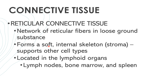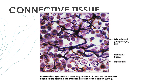Your reticular connective tissue is a network of reticular fibers and loose ground substance. It forms a soft internal skeleton — your stroma — that supports other cell types. This is located in the lymphoid organs: your lymph nodes, your bone marrow, and the spleen. They are located in blood-producing organs.